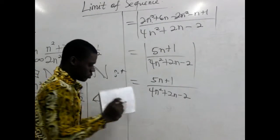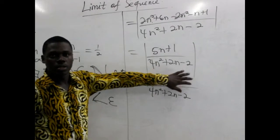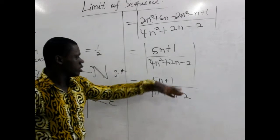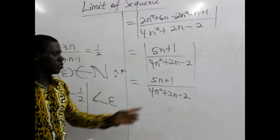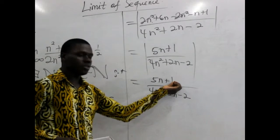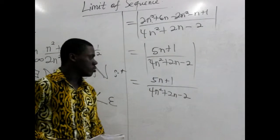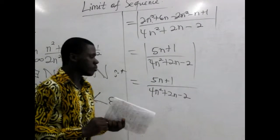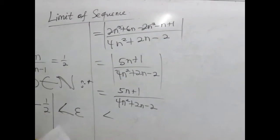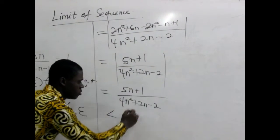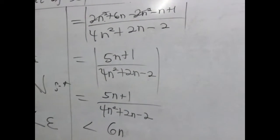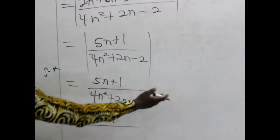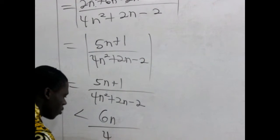Now, we want to increase the numerator and reduce the denominator. To increase the numerator, we will not do away with the 1, because when we ignore the 1, it means we have reduced the numerator by 1. I want to increase the numerator to 6n. Then I reduce the denominator, so I do away with all this. I'm left with 4n squared.